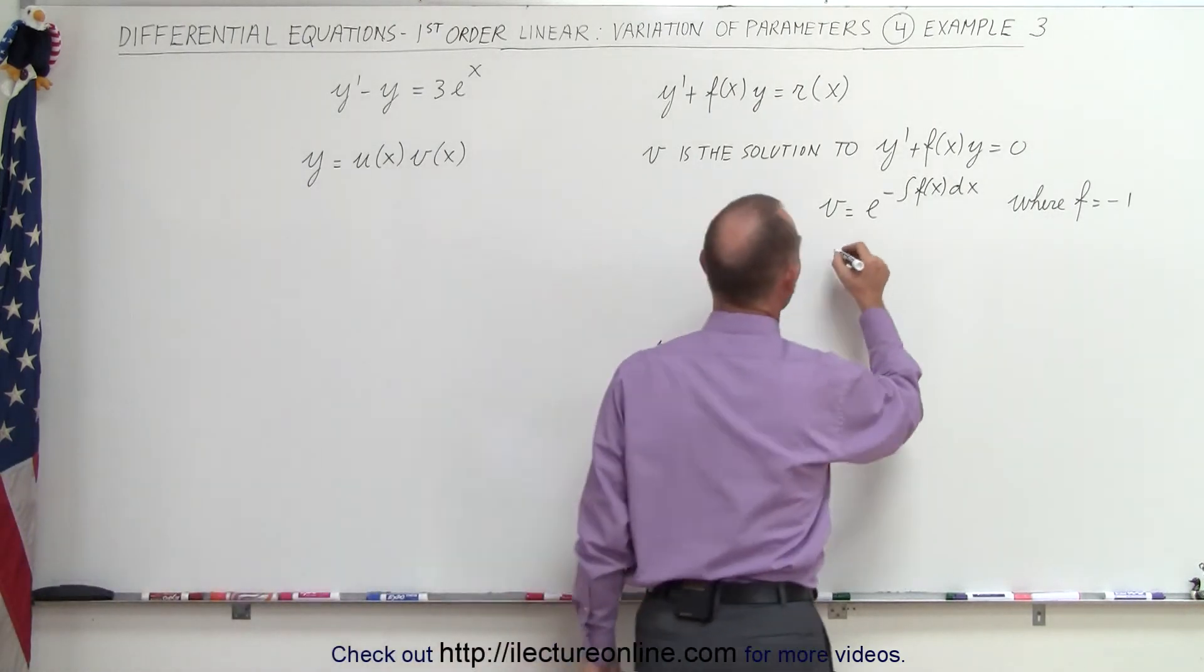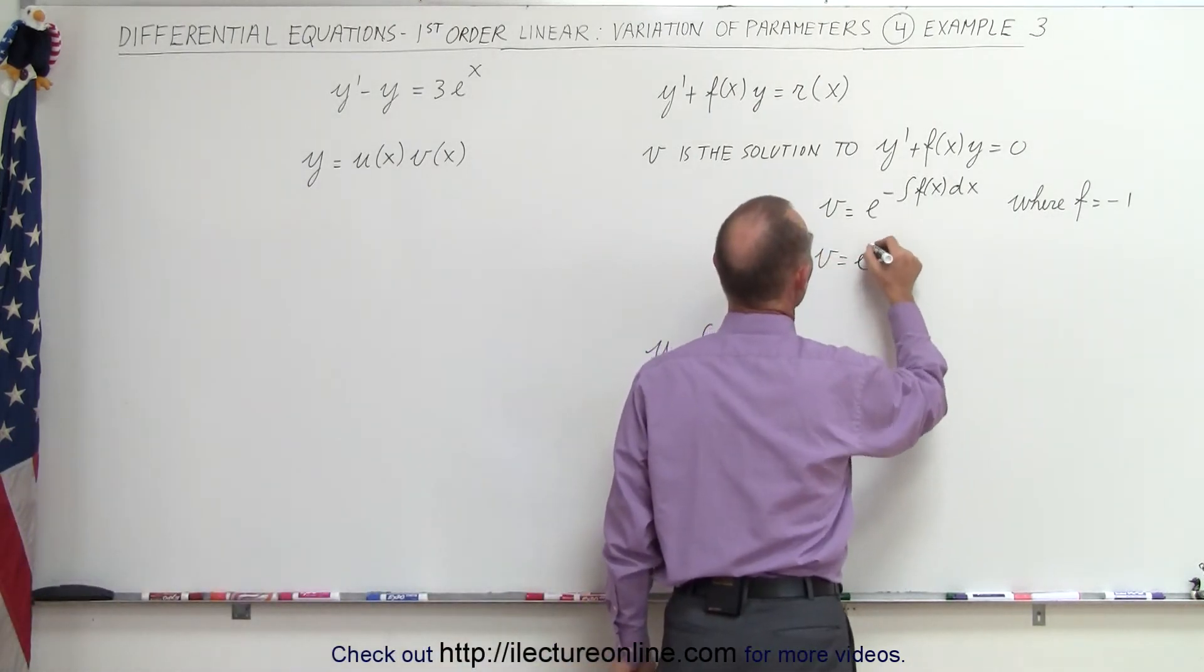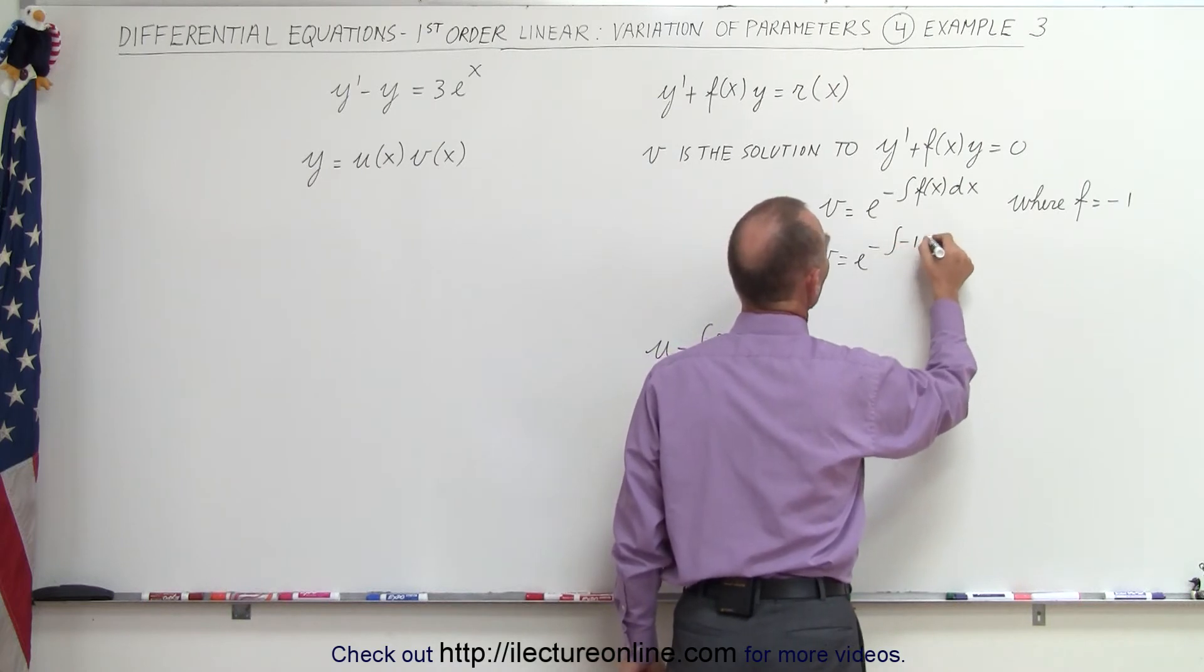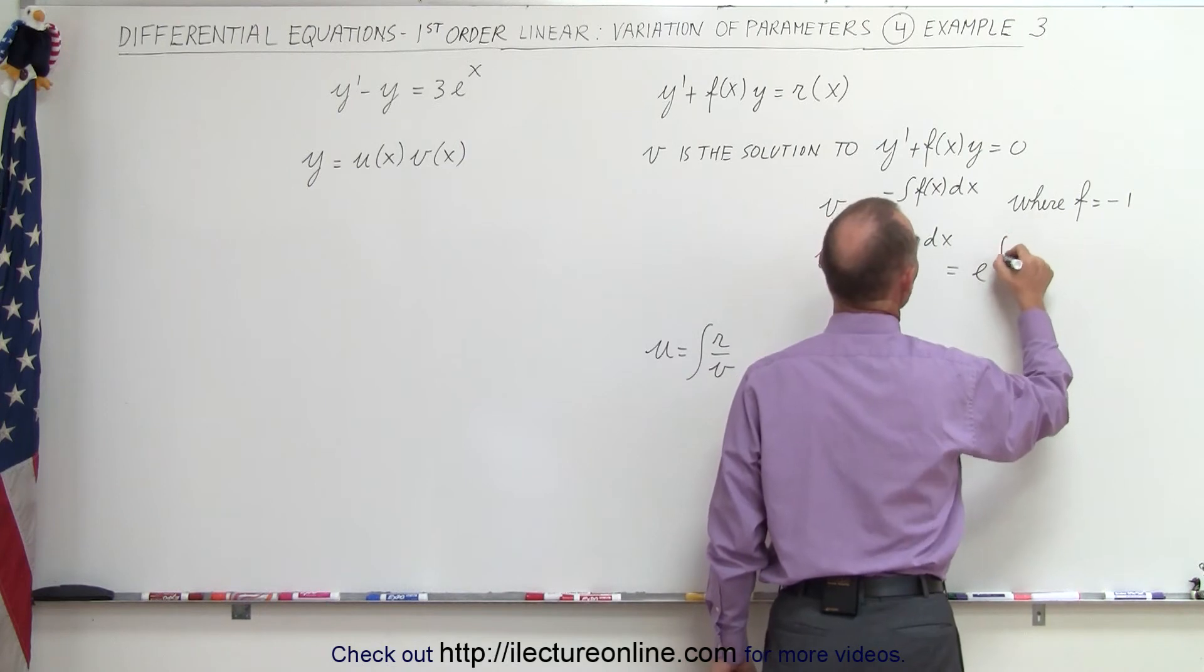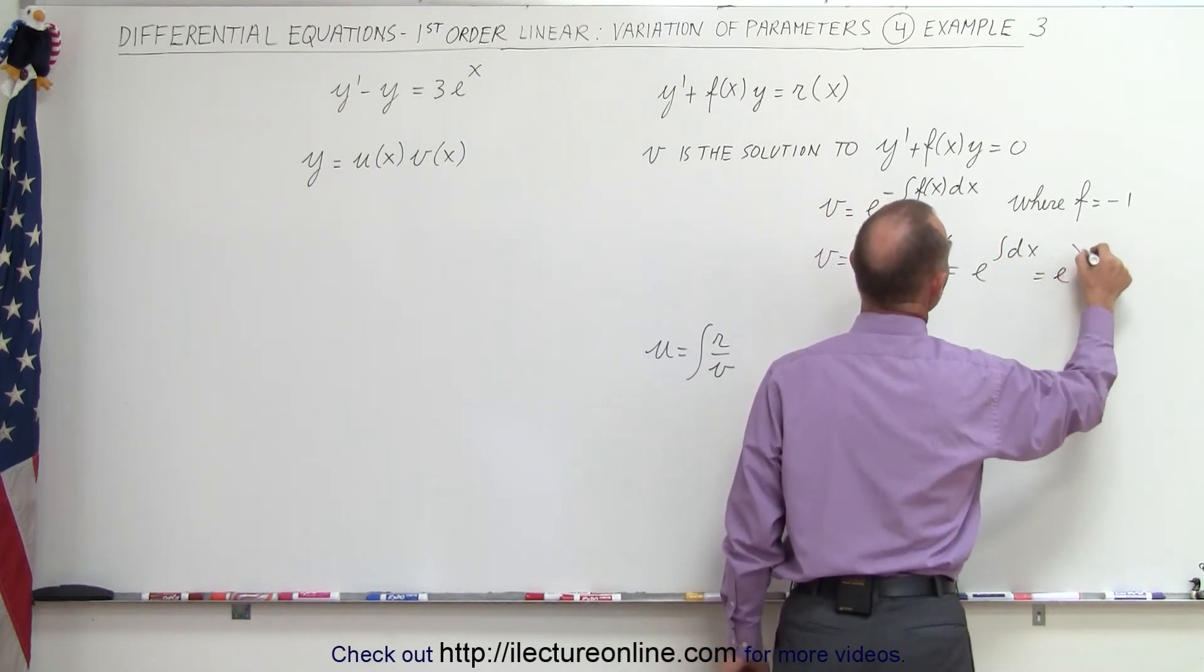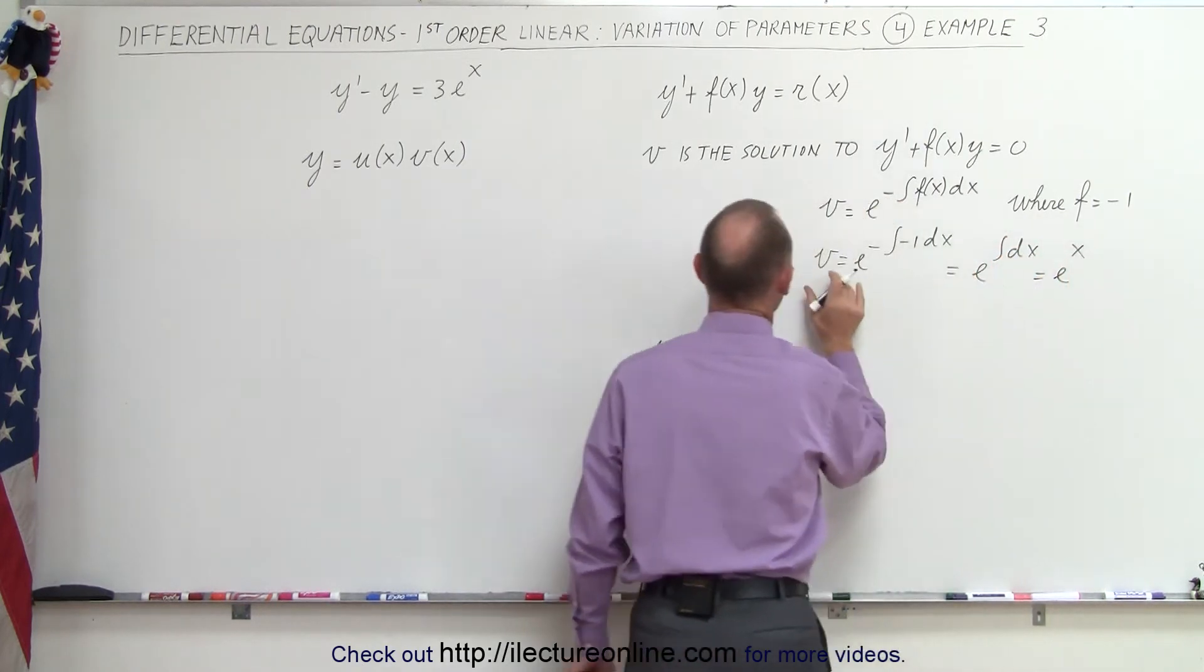All right, let's find out what v is equal to in this case. v is equal to e to the minus integral of minus 1 times dx, which is equal to e to the integral of dx, which is equal to e to the x. So that's the solution for v.